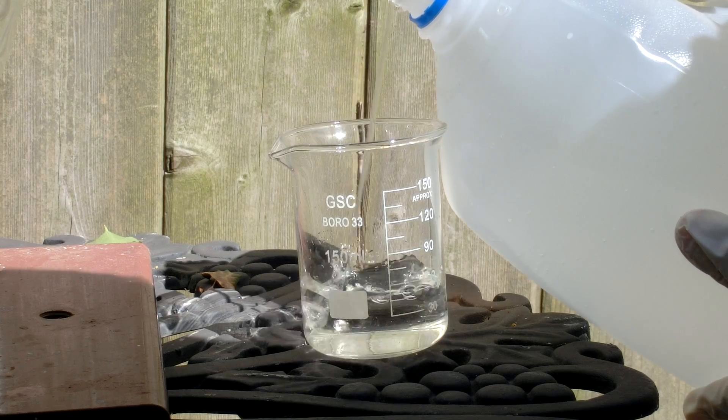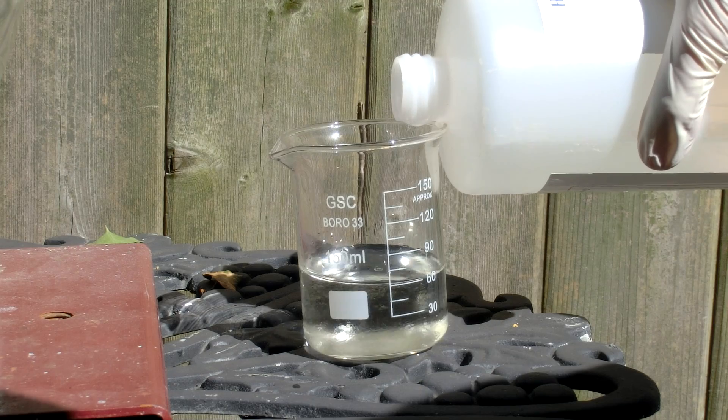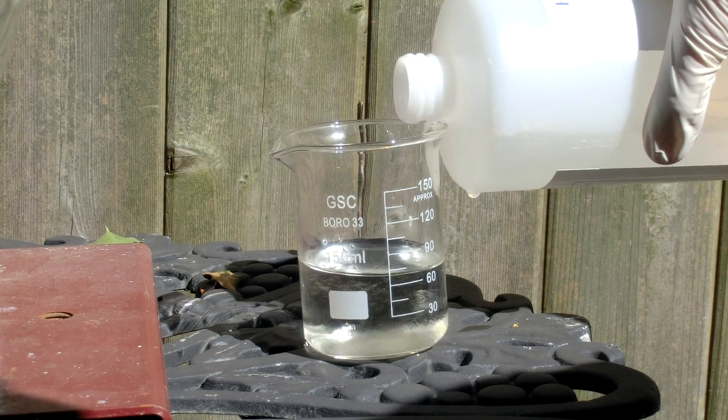Start by measuring out 60 milliliters of water. Then slowly add 60 milliliters of concentrated hydrochloric acid to this.